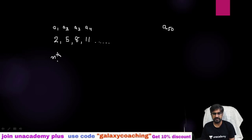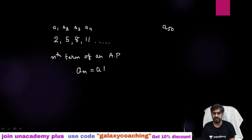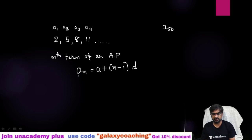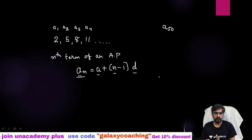The formula for the nth term of AP is: AN equals A plus N minus 1 into D. In this formula, you can see four variables: AN, A, N, and D. If you have any three of these four, you can find out the fourth one.